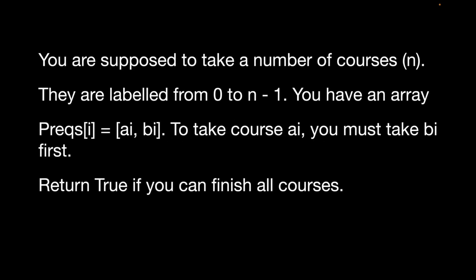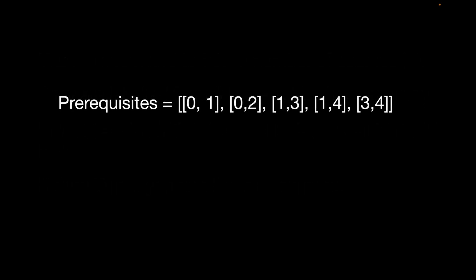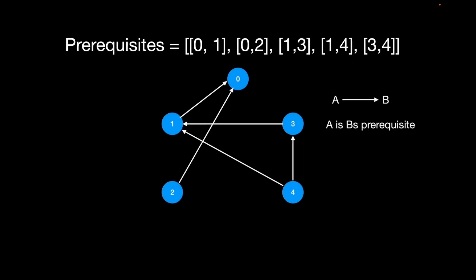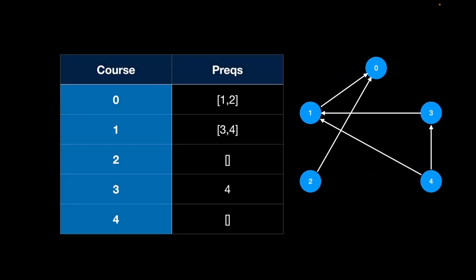You're supposed to take a number of courses n, labeled from 0 to n minus 1. You have an array of prerequisites a_i, b_i. To take course a_i you must have first taken course b_i. You're supposed to return true if you can finish all the courses. We can represent this information in a graph adjacency list, and we need to find out whether or not we can actually take all five courses.